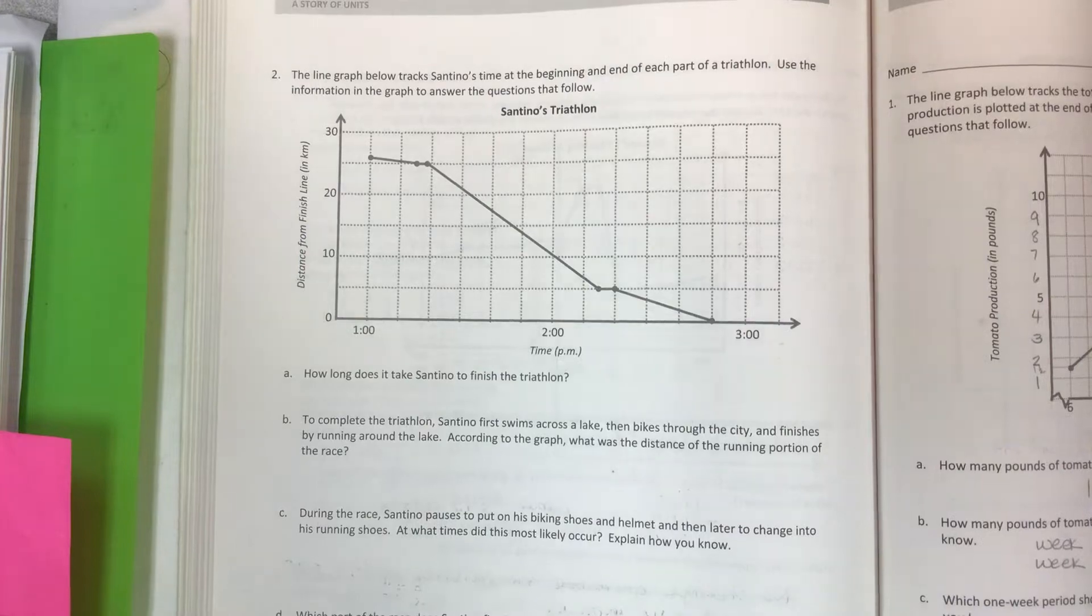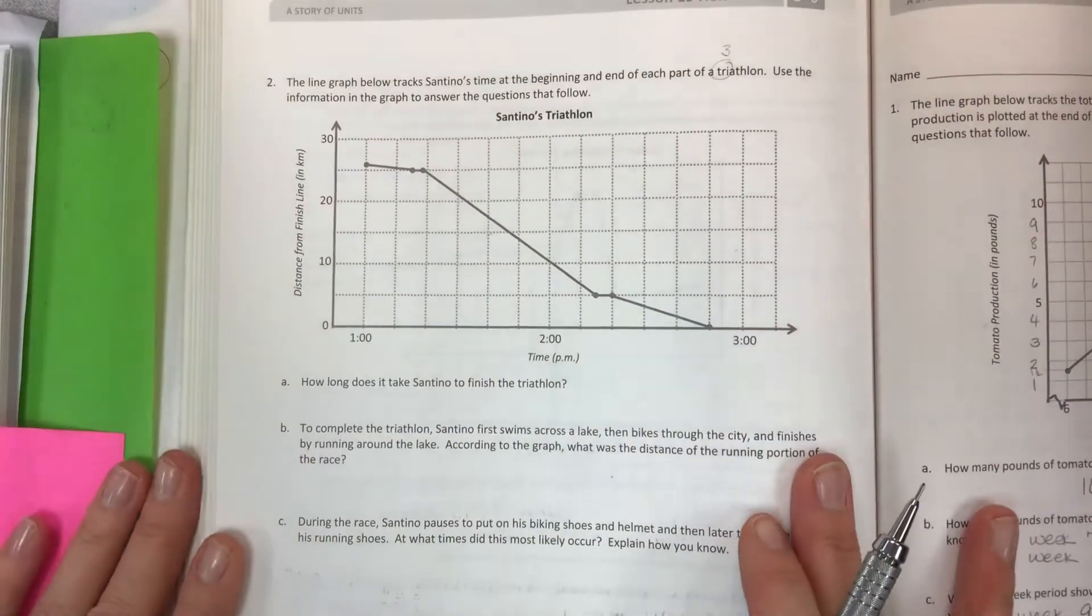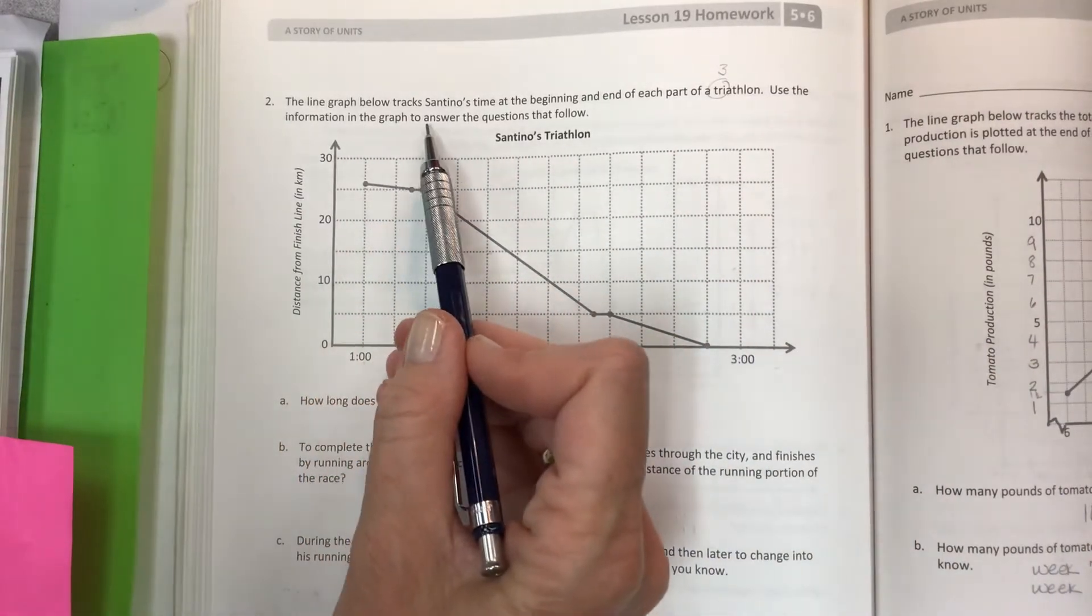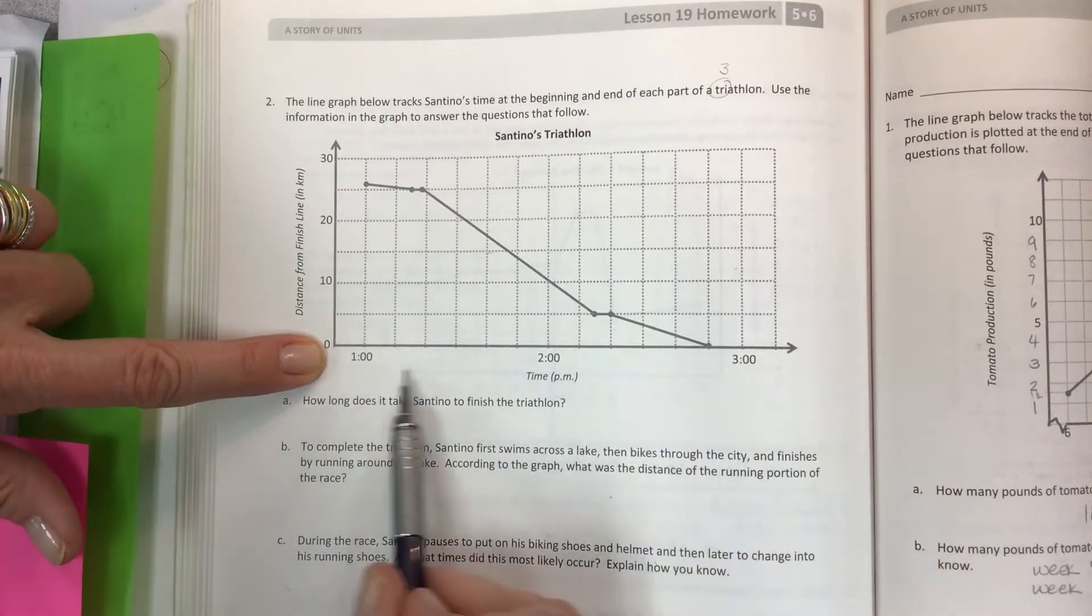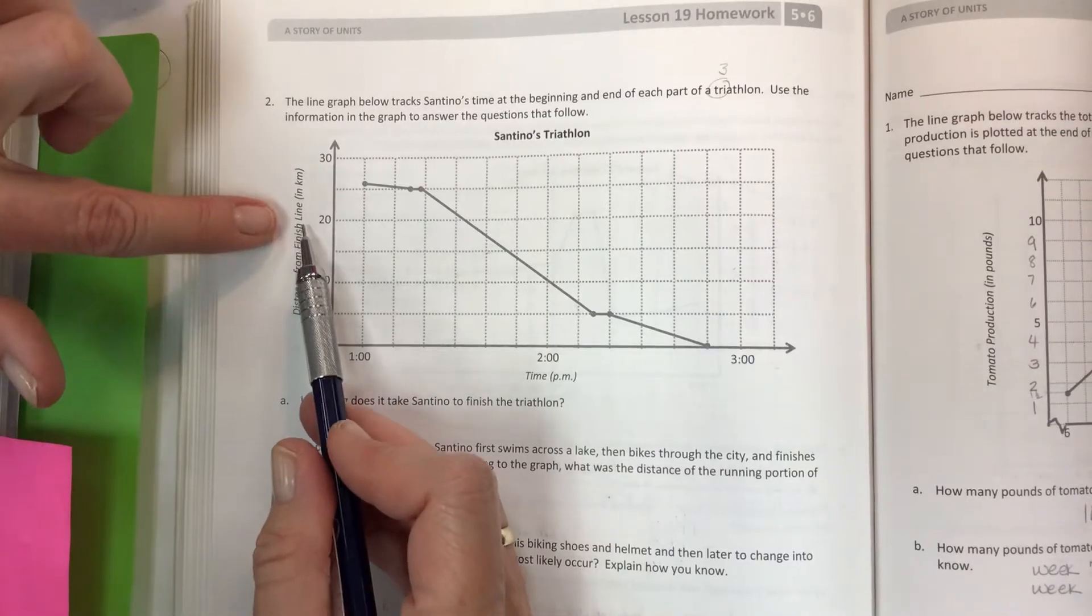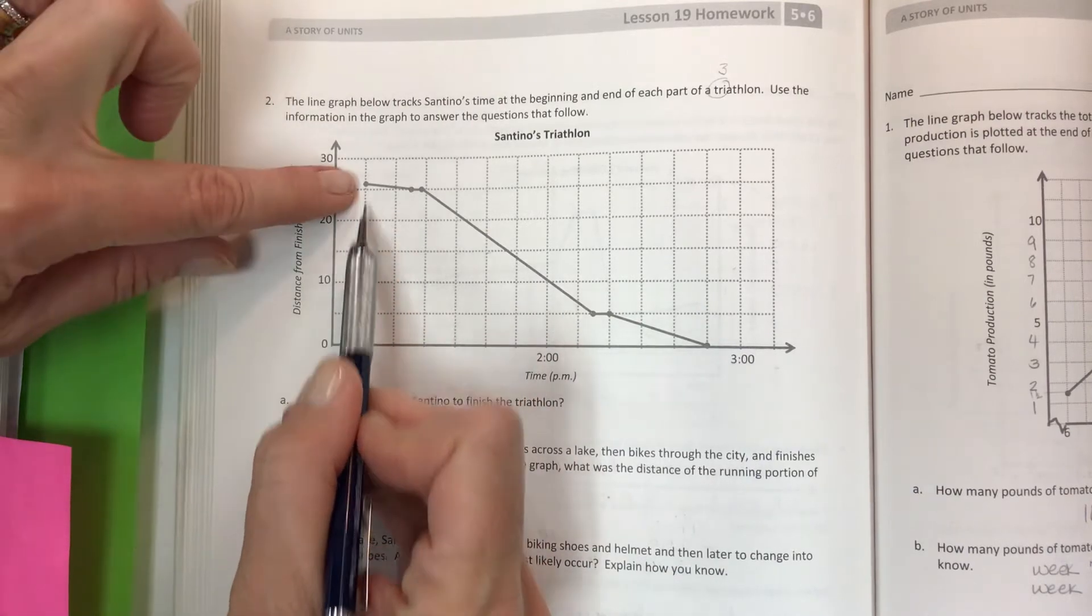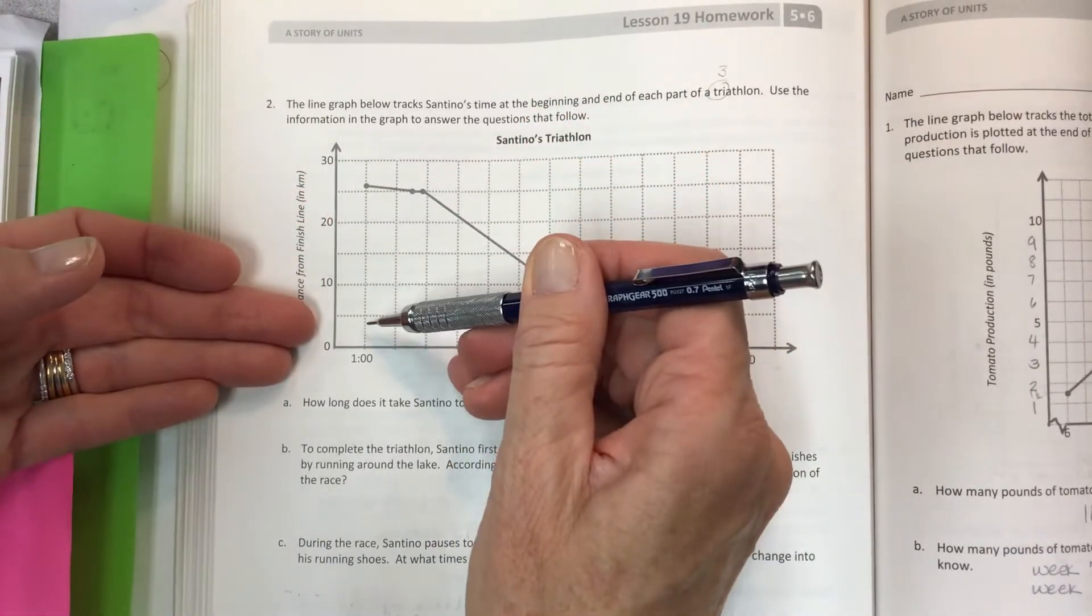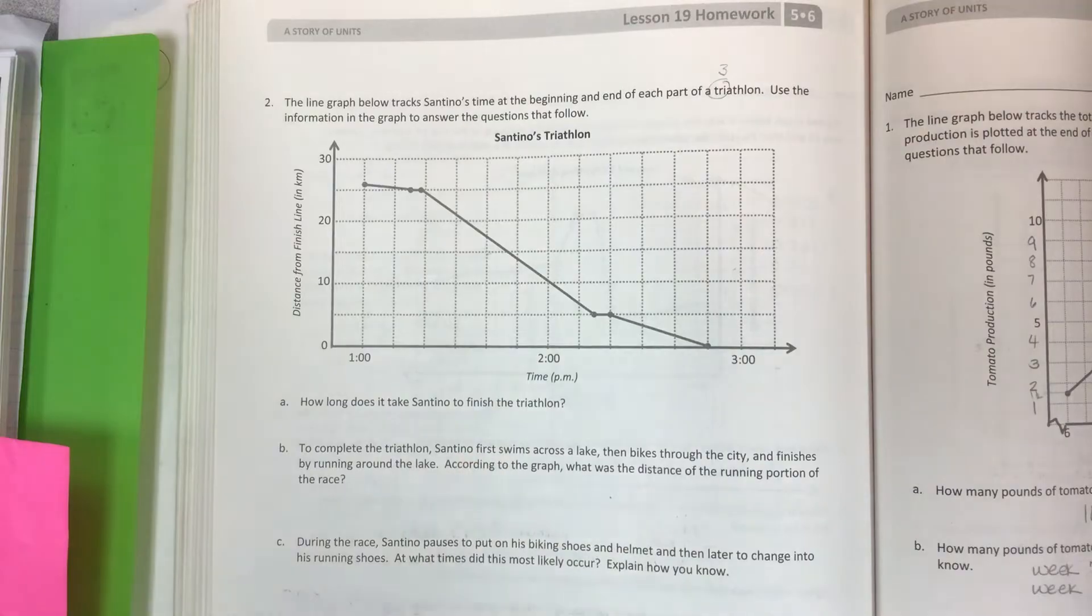The line graph below tracks Santino's time at the beginning and end of each part of a triathlon. Tri meaning three activities where you are a sports fanatic, and usually it is a swim, bike, run. Use the information in the graph to answer the questions that follow. Noticing that again, the time is running along the bottom of the graph because time always marches forward. And this is very important to note. This is distance from the finish line in kilometers. So being farthest away from the finish line and just starting the race, moving toward the finish line is the down. Moving toward the finish line and taking up time.